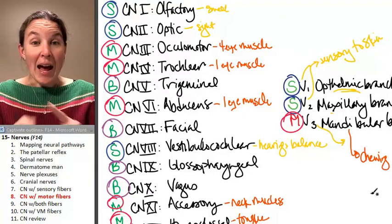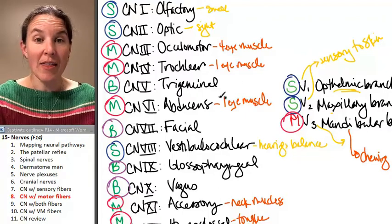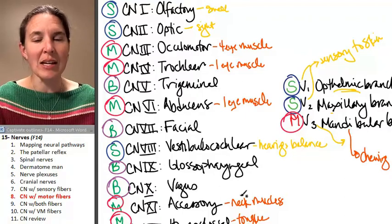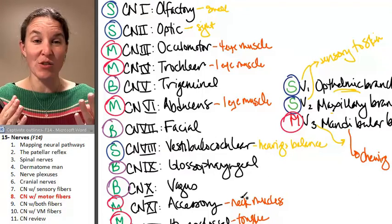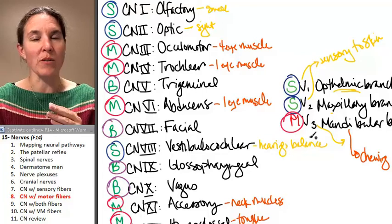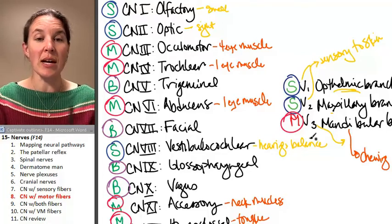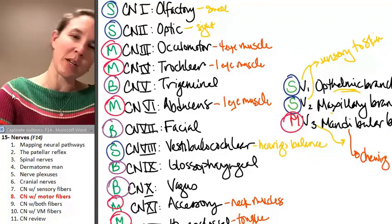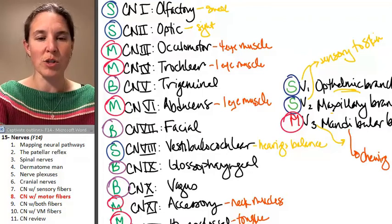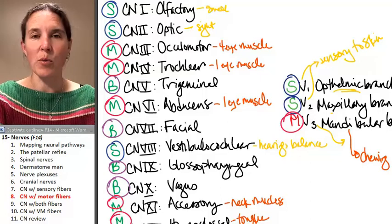Now we're going to look at our buddies that have both. These guys have both sensory and motor fibers. I think there's four of them, including mandibular branch of trigeminal. We're going to look at those guys. They're a little more complicated, so I'm probably going to pull us over to another sheet of paper. That was really important for you to know, huh?